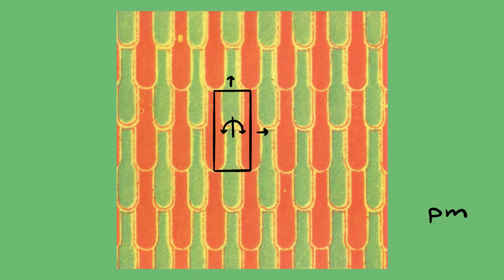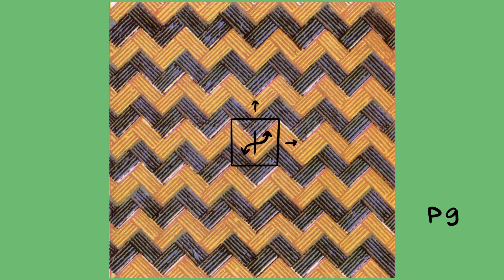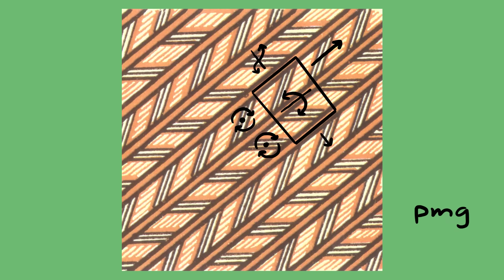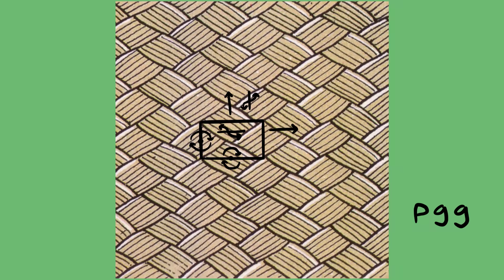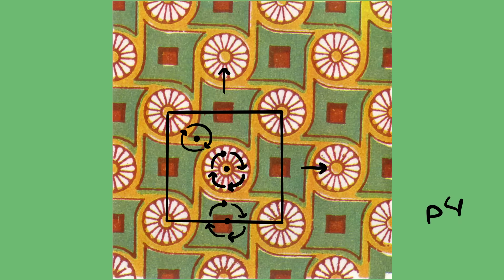That means that every wallpaper, every fabric, every tiling, if it's periodic, and every M.C. Escher tessellation can be categorized as one of these groups.